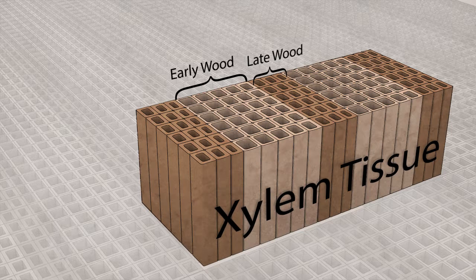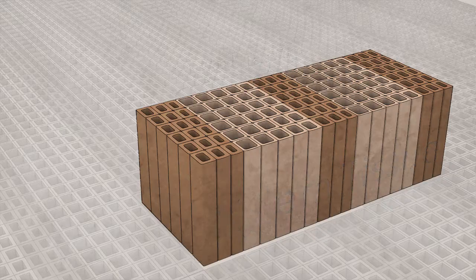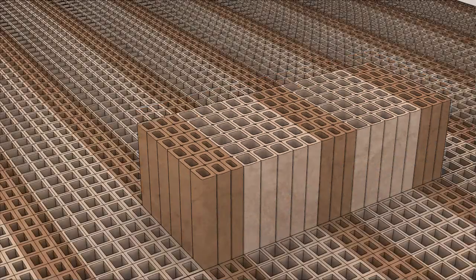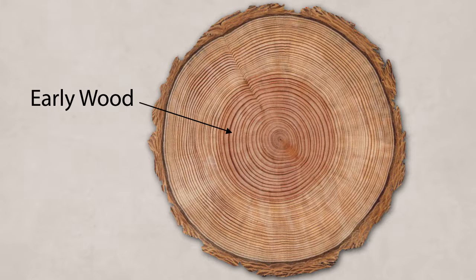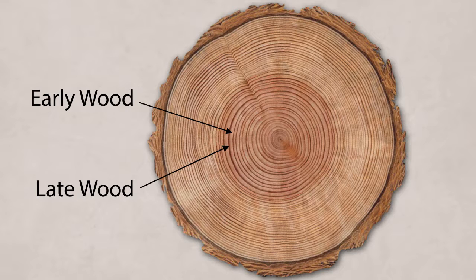Taken together, one year of a tree's life — one growth ring — consists of a band of light colored early wood and a band of dark colored late wood: a ring of light colored wood next to a ring of dark colored wood. If you were to count either the dark colored bands or the light colored bands, you'd be able to determine the tree's age.